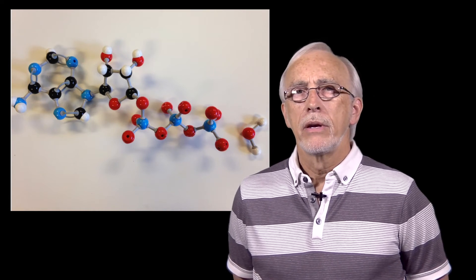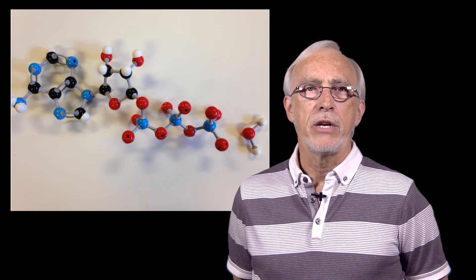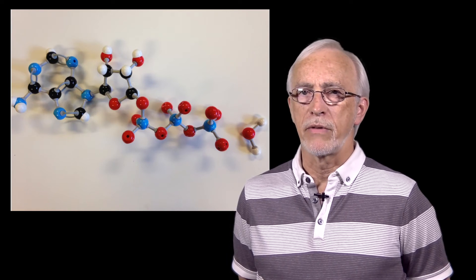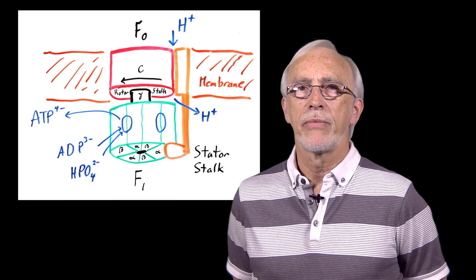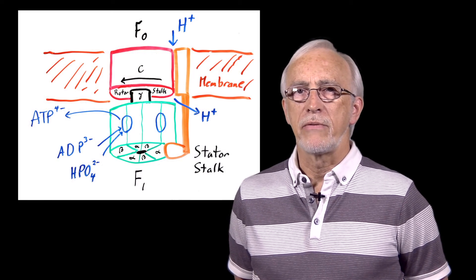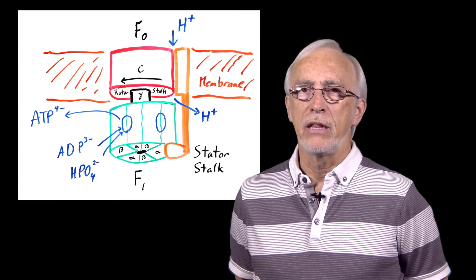How is it that the binding site forms change? The binding site changes conformations because of the molecular stalk, called the gamma part of the complex, that rotates around the central axis of the F1 complex. The stalk consists of a double-stranded braid of alpha helix protein.